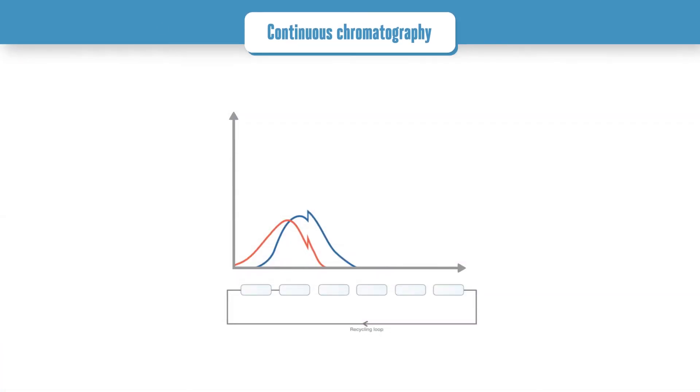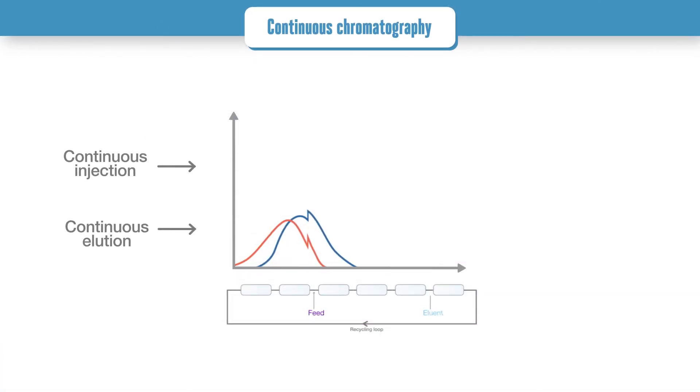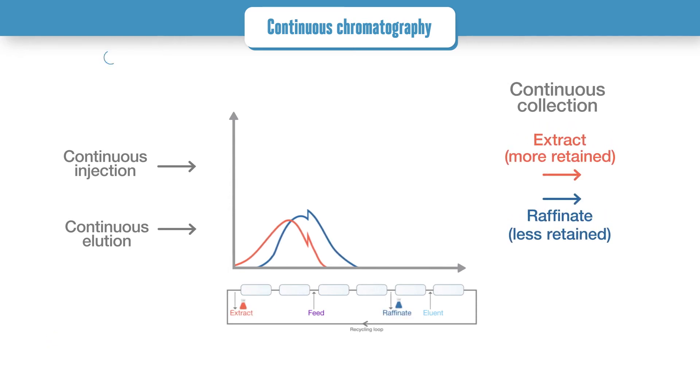Continuous chromatography is based on continuous feed injection and continuous collection of target and unwanted streams, taking place in a series of columns connected in a loop. The injection takes place while separation and collections are ongoing, at different places in the loop of columns.